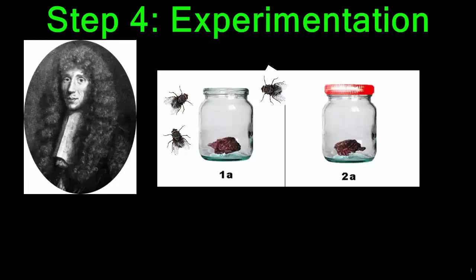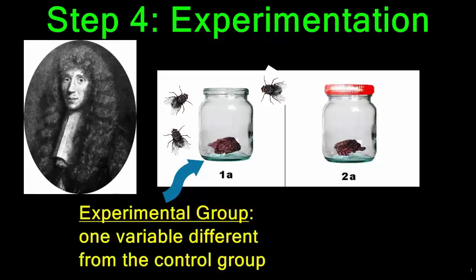Each of these two groups are referred to as an experimental group and a control group. The experimental group is the jar that has no lid and allows flies to get to the meat. An experimental group only has one variable that is different from your control group — in this case, the flies which can get to the meat.